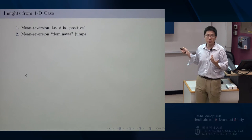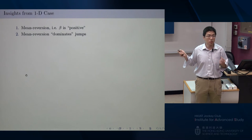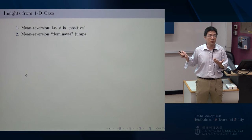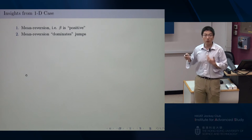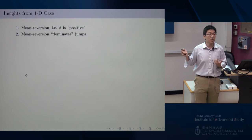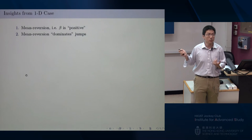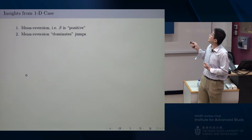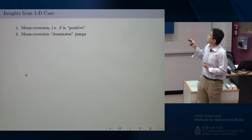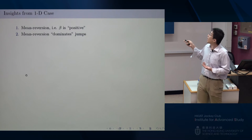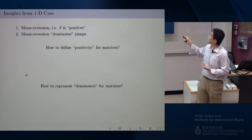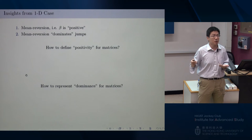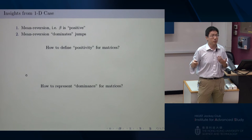Recalling the two key factors for stochastic stability: first, I want mean reversion, which means beta must be positive. Second, I want mean reversion to be strong enough to dominate the jumps. In the one-dimensional case this is clear, but how do I generalize 'positivity' and 'dominance' to the multidimensional case? How do I define positivity for a matrix, and how do I define this dominance in higher dimensions?